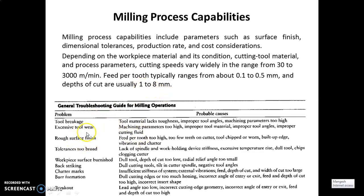Here are some problems associated with milling machines. Tool breakage may be caused by tool material lacking toughness, improper tool angles, or machining parameters being too high. Tolerances being too broad may be due to lack of spindle and work holding, drive stiffness, excess temperature rise, a dull tool, or chip clogging in the cutter. These are general troubleshooting guides for milling operations that we have to consider to overcome these problems.